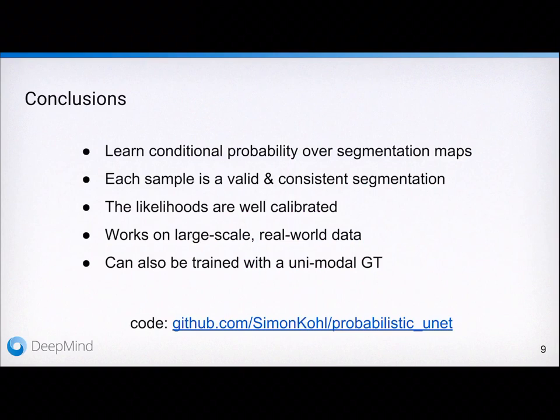To summarize, our model learns conditional probability distributions over segmentations. Each sample is a valid and consistent segmentation whose likelihoods are well calibrated. This works on large-scale, real-world data and can also be trained with a unimodal ground truth. The model code, by the way, is available on GitHub.